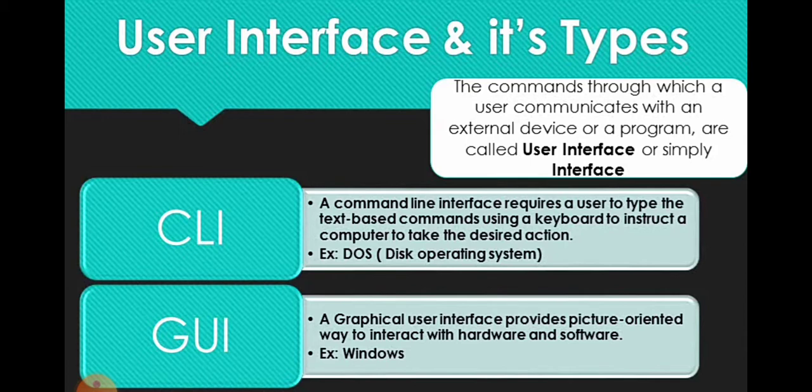In the Command Line Interface, the user types text-based commands using a keyboard to instruct the computer to take the desired actions. An example is DOS, the Disk Operating System. The GUI, the Graphical User Interface, provides a picture-oriented way to interact with the hardware and the software.